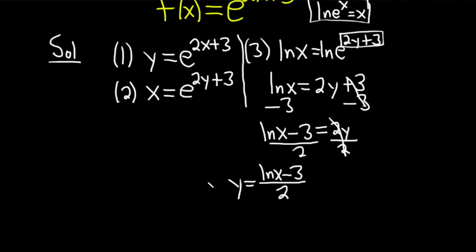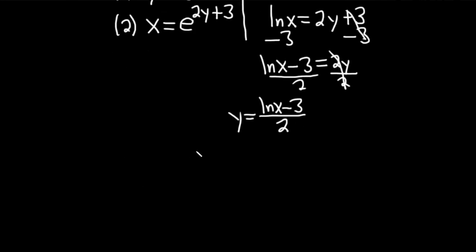That's the inverse function. So basically now we just have to say that. So step 4 is to use the proper notation. So our original function was f of x. So the inverse function is written like this. f inverse of x. That's how you read it.